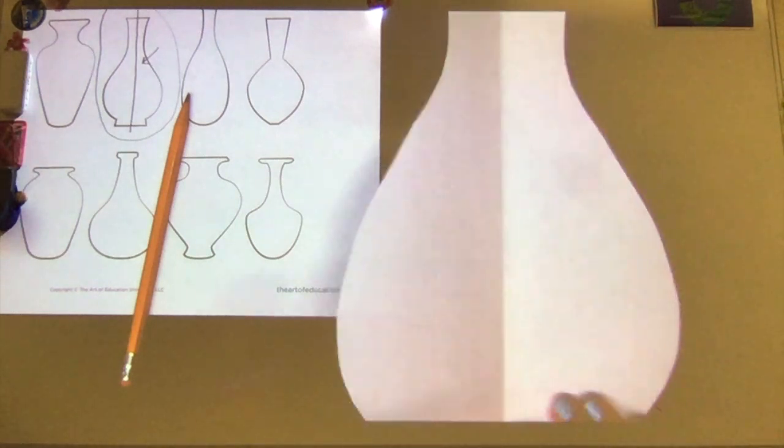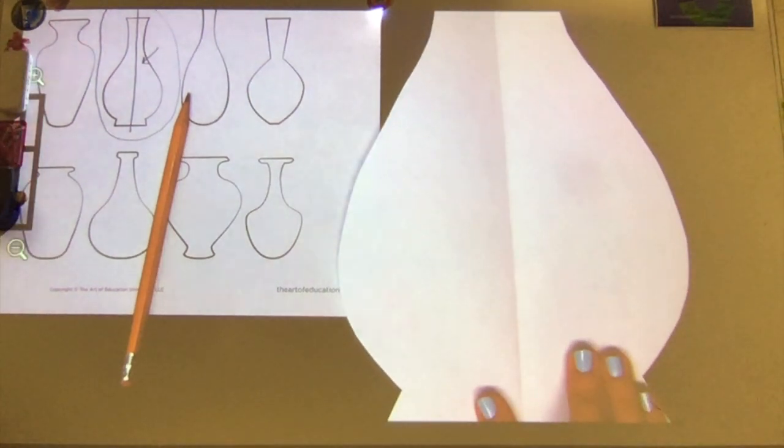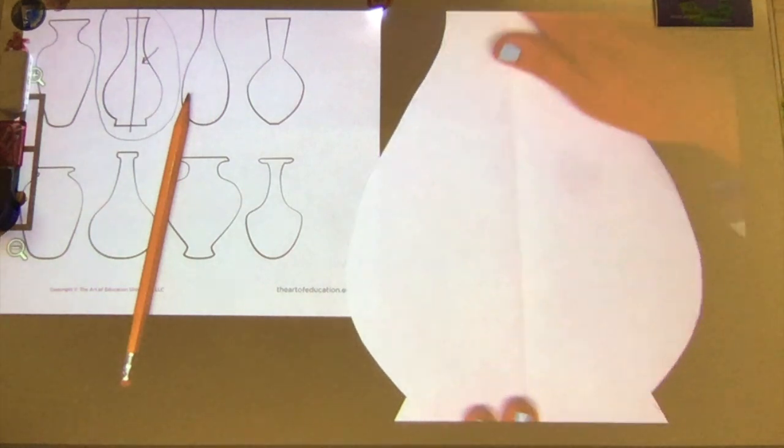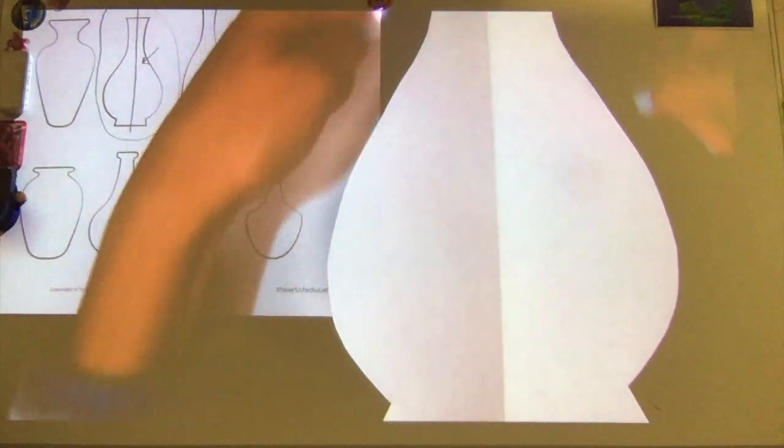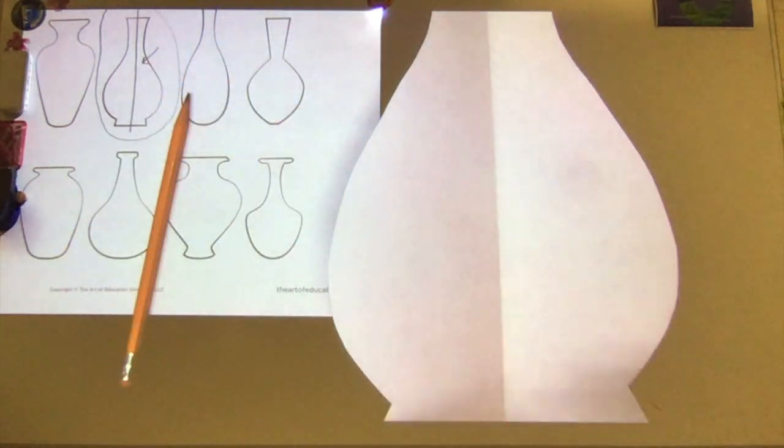Now, unfortunately, I can't fit my entire vase on the document camera. So you can only see a small section of it, but you can see it's the same on both sides. It's symmetrical.